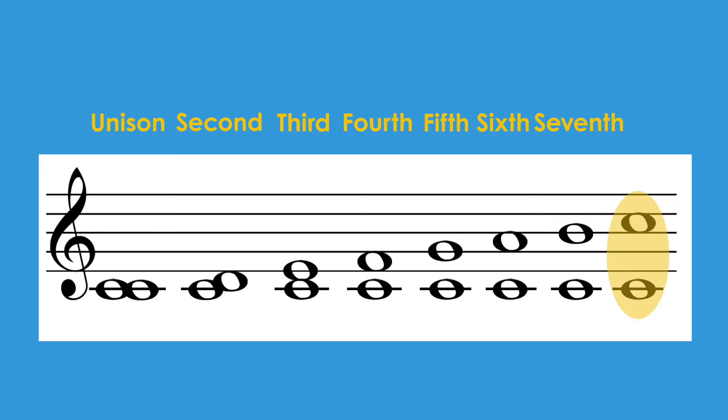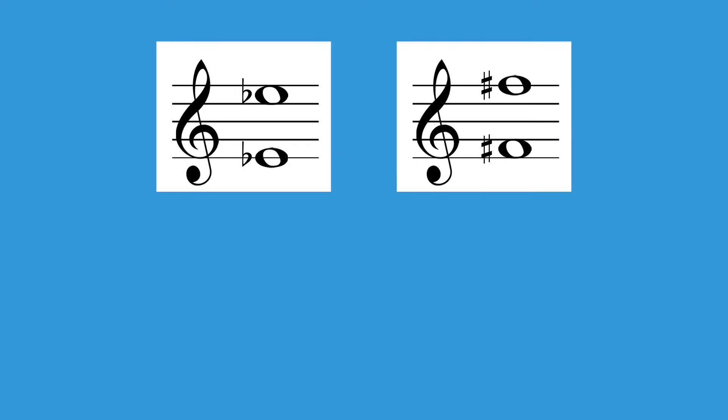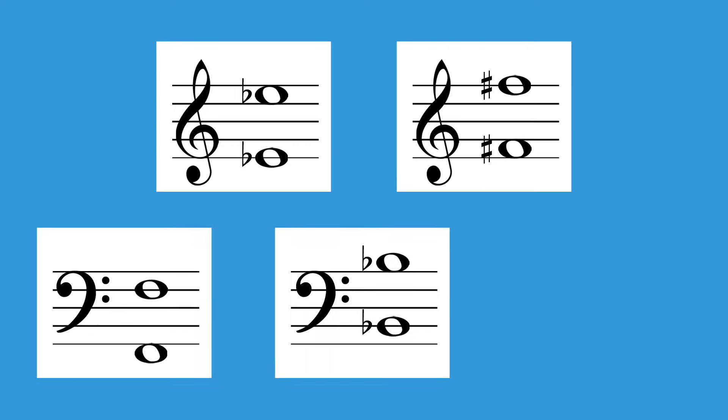The last interval, from low C to high C, also has a special name. This distance is called an octave. An octave is the distance from one note to that same note name either higher or lower on the staff. This is an octave, this is an octave, and all of these are octaves.